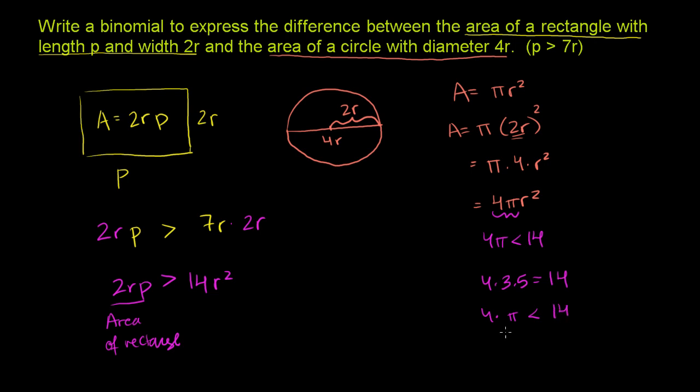So we know that this over here is larger than this quantity. It's larger than 4 pi r squared. And so we know that this rectangle has a larger area than the circle.